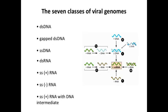Here are the seven classes of genome. There are viruses with DNA genomes — they can be double-stranded or single-stranded, and they can be gapped. That really covers everything. Then we have RNA viruses with RNA genomes — this is what's in the virus particle itself. We have double-stranded RNA genomes. We have single-stranded RNA genomes of three types: plus-stranded, minus-stranded, and a plus-stranded genome that goes through a DNA intermediate. These are very special viruses.